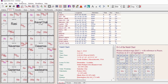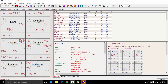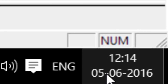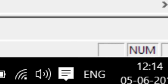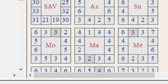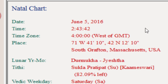And this is what you will get to see. The beauty of Jagannatha Hora is that it always takes the system date when it starts. Today happens to be June 5th, 2016. However, the time shown is 2:43 while the system time is only 12:14. Let's find out why — the default place of birth is South Grafton, Massachusetts, USA, and you need to change this.